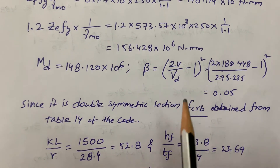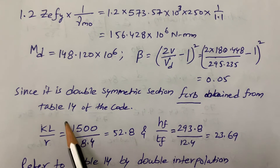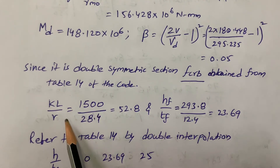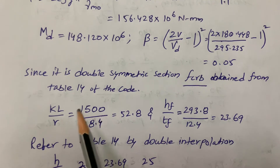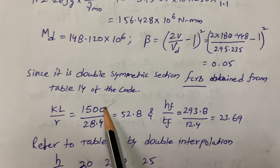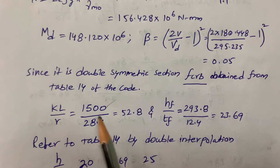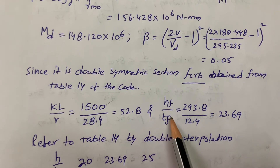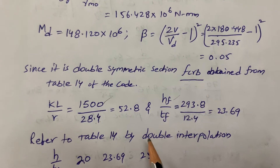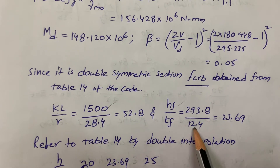Next we calculate the critical stress FCRB by referring to Table 14 of the code. We need KL/R = 1500/28.4 = 52.8, where KL = 1500 mm (the beam length converted to mm) and K = 1. Also HF/TF = 293.8/12.4, where HF is the center-to-center distance of the flanges already calculated. I got the HF/TF value.